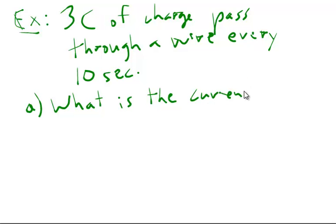And to solve that, we can use our equation, I equals, and now we have 3 coulombs of charge in 10 seconds. It means 0.3 amps.